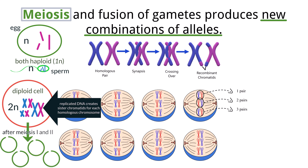At the end of meiosis, each cell contains a random split of the chromosomes, which means each gamete has one chromosome from each of the homologous pairs. This is called haploid. For humans, our diploid number is 46, so our haploid number is 23.